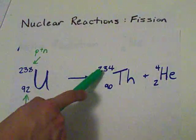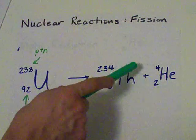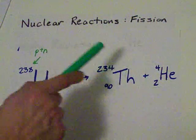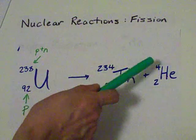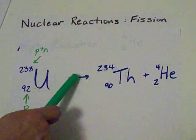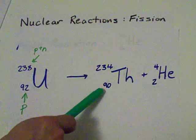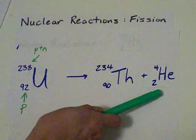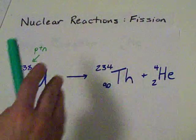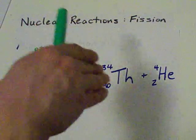Check it out. 234 plus 4, I'm counting the top numbers, equals 238. These numbers have to add up to the same amount on both sides. 92 equals 90 plus 2. And we're always going to remember that. It's going to make these things the most easy reactions in the world for you.